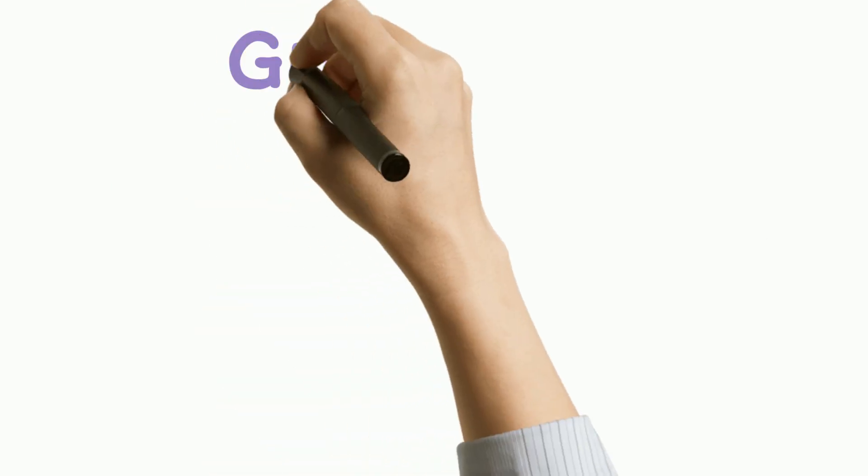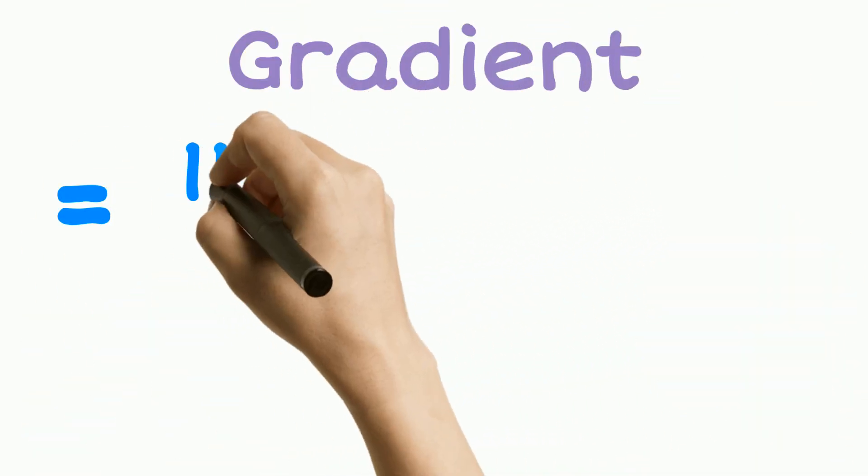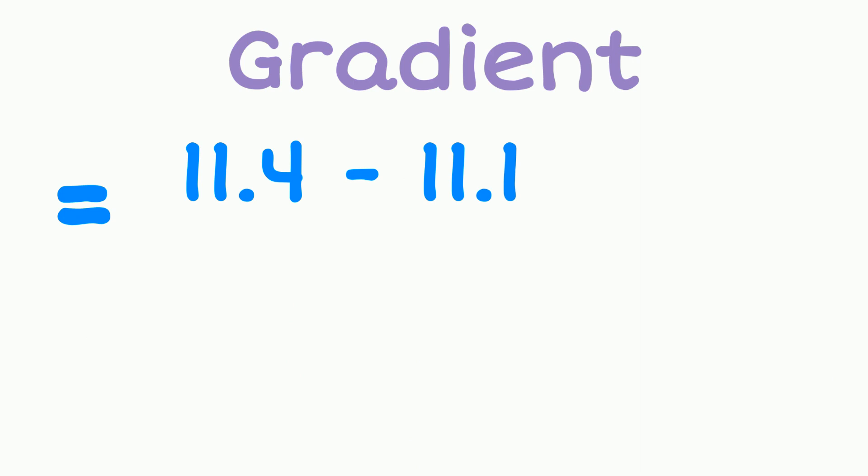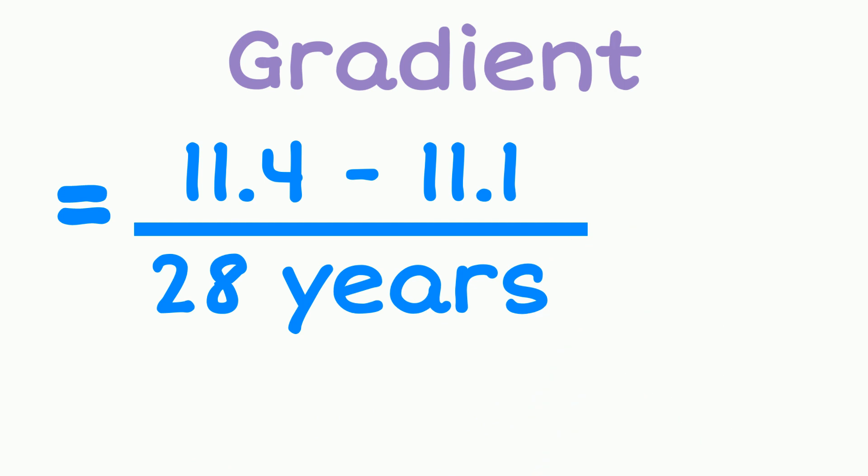When we calculate the gradient we've noticed that our surface area reduced from 11.4 million square kilometres to 11.1 million square kilometres. So we're going to subtract those two and then divide that by the time period which in this case is 28 years.